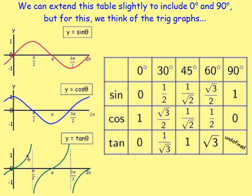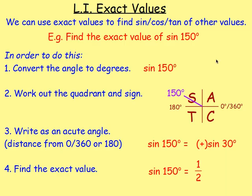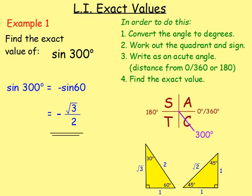At 90 degrees the tan graph has a vertical asymptote — the line the tan graph gets closer and closer to but never touches, so it would be undefined. You can apply exact values to work out the exact value of multiples of 30 and 45. For example, to find the exact value of sine 150: work out the quadrant — 150 degrees is in the second quadrant, sine is positive there — find the acute angle, which is 30 degrees away from 180. So positive sine 30, and sine of 30 is a half, using the exact value triangles.